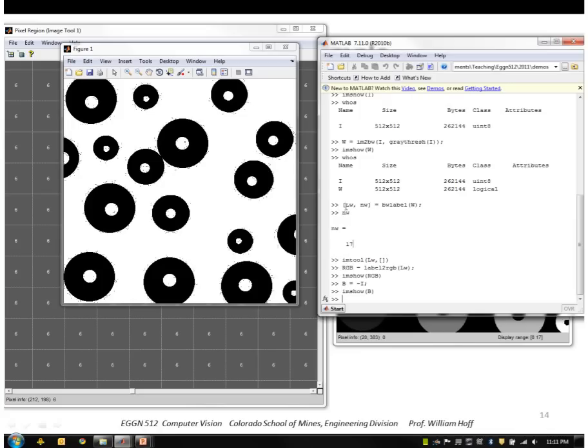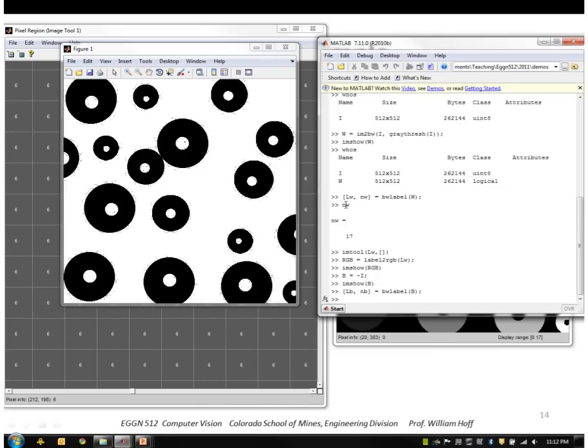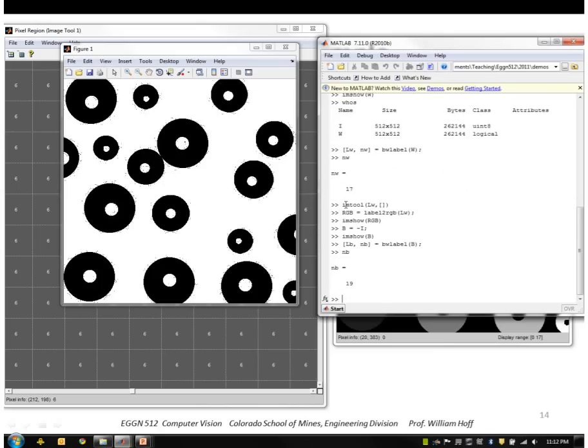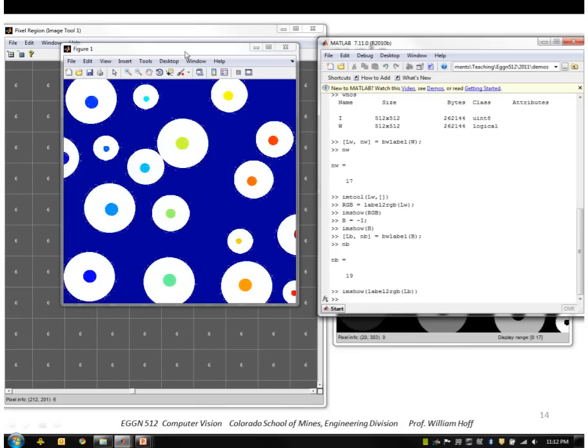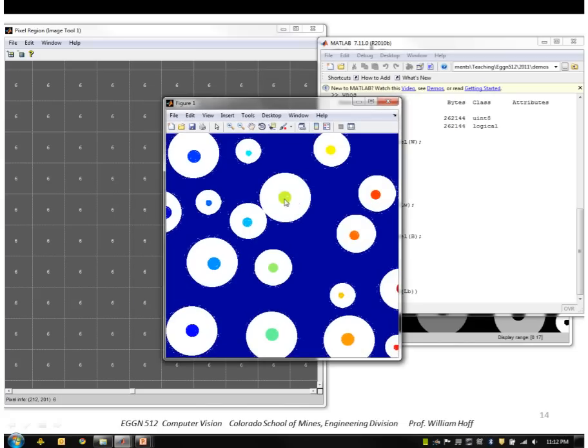And then I could run BWLabel on that to get the black labels. Let me just do that. I'll call it LB and NB. So now I have 19 black regions, and let me show those. So you can see the different colors for the different black regions. Of course, this background region is all a continuous, a single connected region, which is this dark blue.